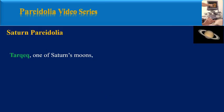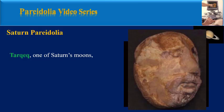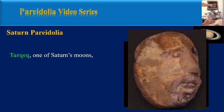Tethys is the name of another of Saturn's moons. This NASA photo taken from the surface of Tethys looks like a human face.